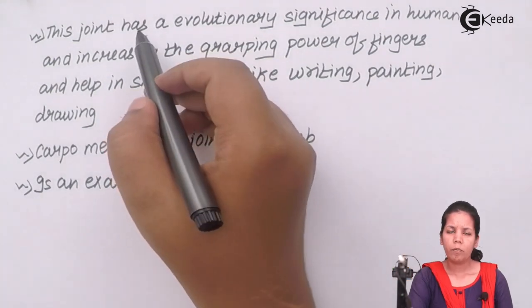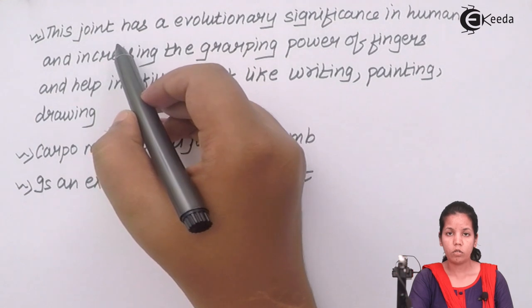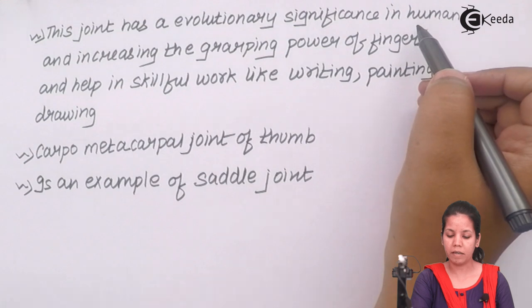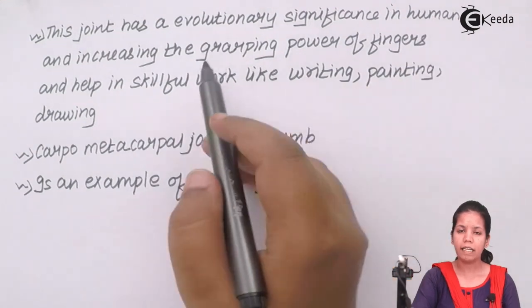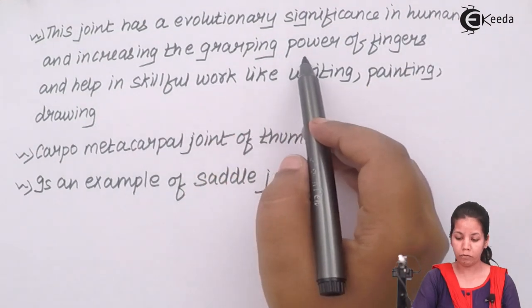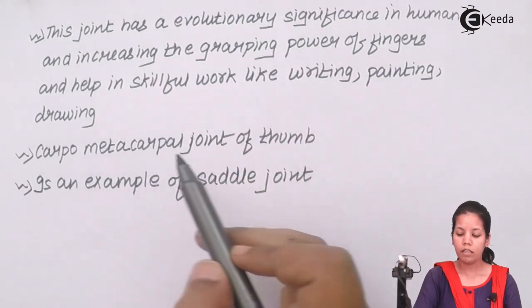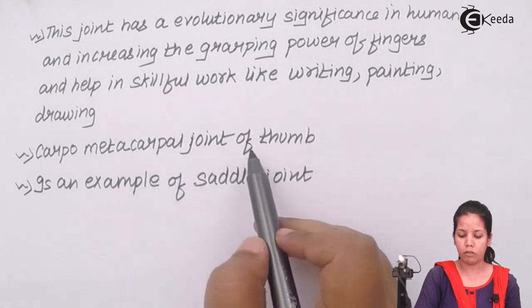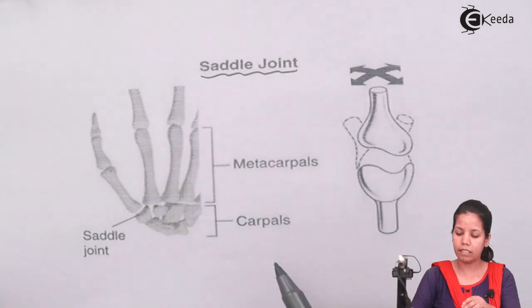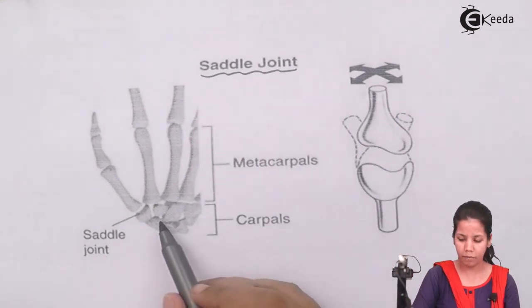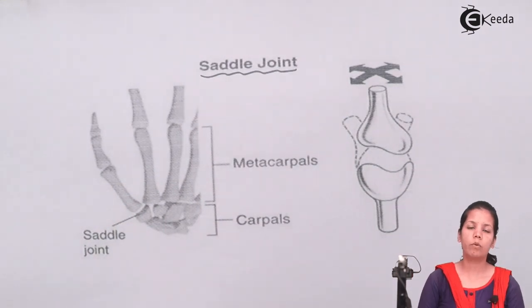Saddle joints have very evolutionary significance in human beings. It increases the grasping power of the fingers, helping in skillful activities like writing, painting, and drawing. The carpometacarpal joint of your thumb is an example of this. Students, this is the diagram of saddle joints — you can see where the saddle joints are present. I hope students are very clear with this concept of saddle joints. Thank you.